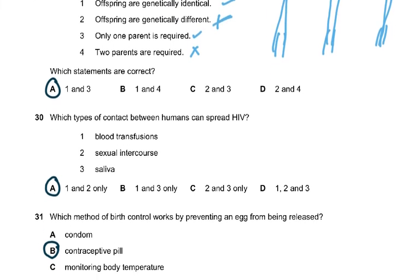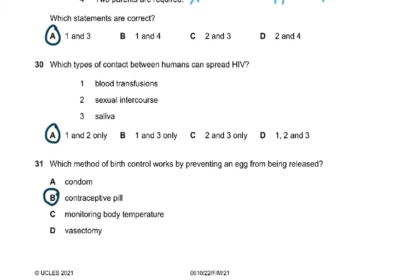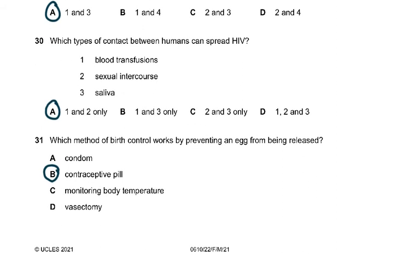Question 30: which types of contact between humans can spread HIV? The answer was only blood transfusion and sexual intercourse — options one and two. Saliva was wrong.